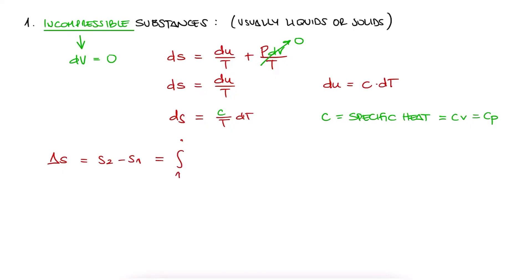This means that for incompressible substances, the change in specific entropy is s2 minus s1, or the integral between 1 and 2 of c over T dT, which if c is constant, becomes c average times the natural log of T2 over T1. And this is all we need to know about incompressible substances.